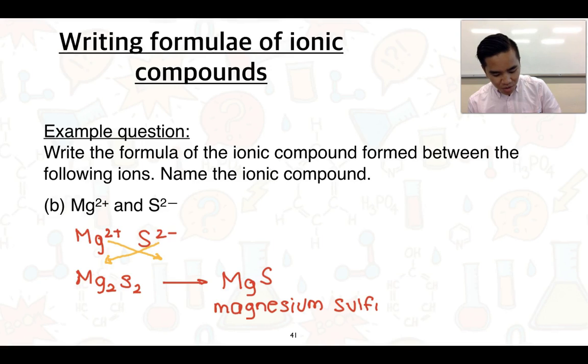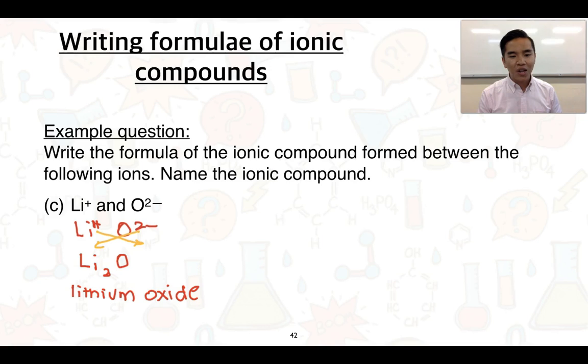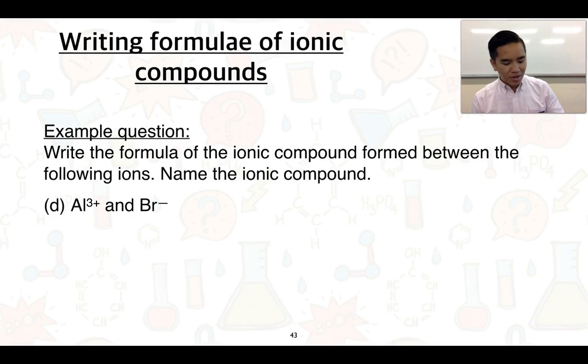Third example: we're going to write Li+ first, so the metal ion first, non-metal ion second. Let's crisscross these. Remember that if we don't have a number it's just equal to one. So we're going to bring that down to oxygen, we're going to bring that two down to the lithium, and we're going to end up with a formula of Li2O1 or just O, and the name of this is lithium oxide.